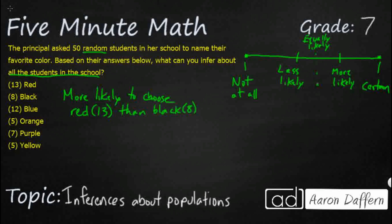So that is a true statement that we can make. Black is eight. So that is an inference we can make about all the students in the school. They are more likely to choose red than black. Now we don't know because we haven't asked every student, but in our random population there were 13 red and there were eight black.